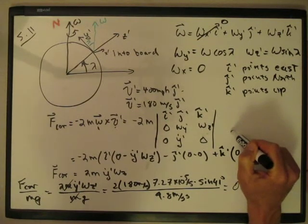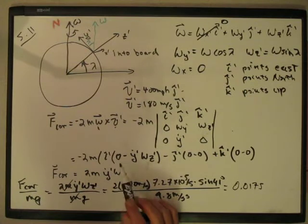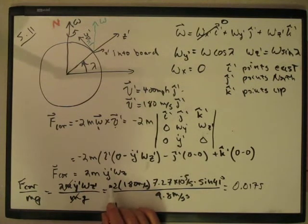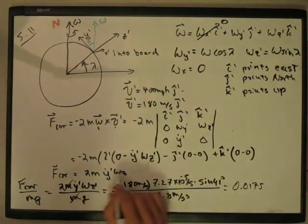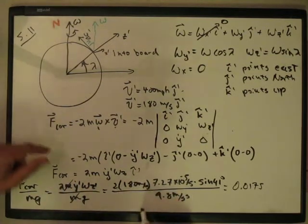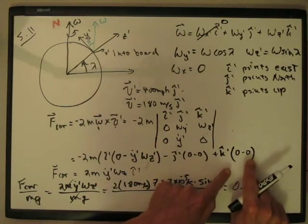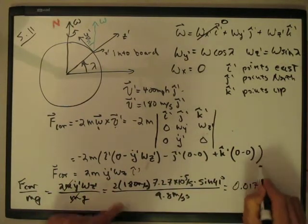And what I get is just a single term. I get an i hat prime term. And so with a minus sign in front of it. And so this is a plus, I should have, if this is a vector, I should have an i hat prime here. So this is the only term that's not zero.